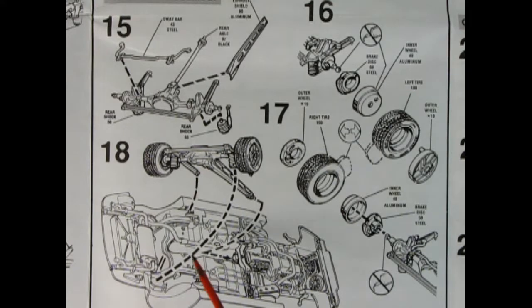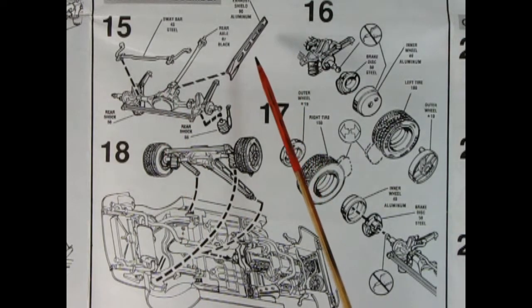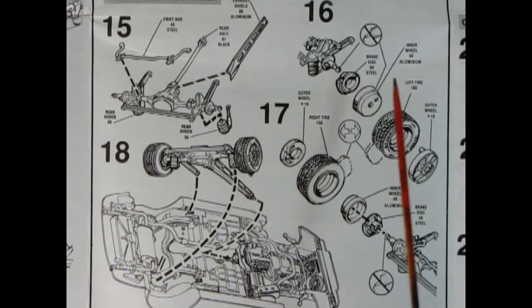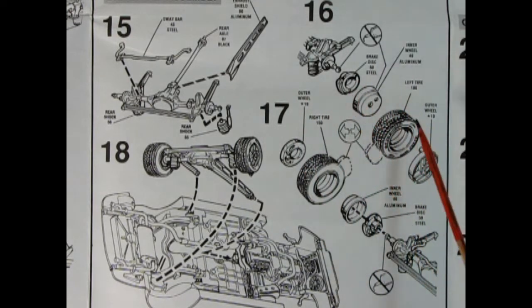Panels 15, 16, 17 and 18 are all the drivetrain assembly. So here we have our rear differential, a sway bar, and our exhaust shield going up onto here. And then in panel 16 we're adding on the disc brakes, the inner wheel, the tire, and the outer wheel.